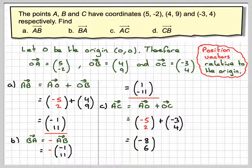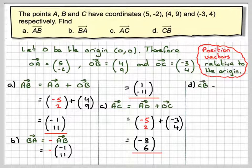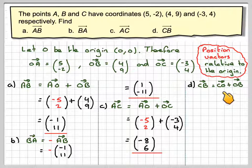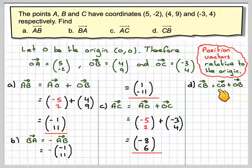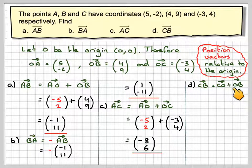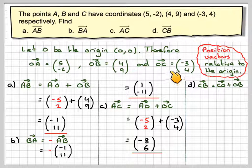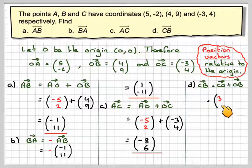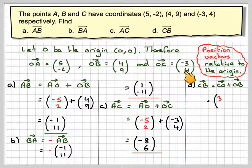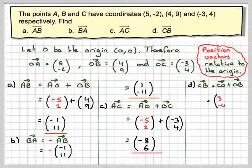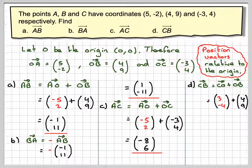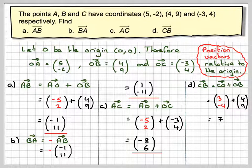In the last case, I've got to find the vector CB. So CB can be found by doing CO, so from the point C to the origin, and then from the origin to B. But here I have the vector OC, so I need to change the signs on these. So it's going to be (3, -4), plus OB, which is (4, 9). And then 3 plus 4 is 7, and -4 plus 9 is 5.